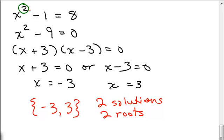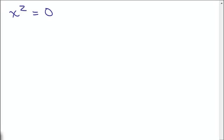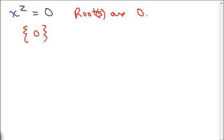Since the exponent is 2, if the highest exponent is 2 you can't have more than two roots. You may come up with no roots or one solution, but there won't be more than two. For example, X squared equals 0 has only one solution: X equals 0. So for this equation, the root is just the number 0.